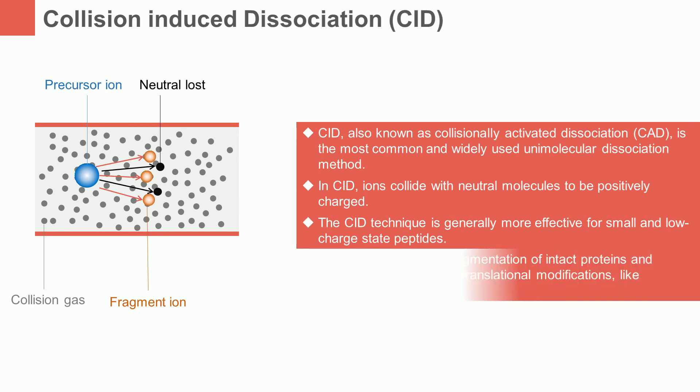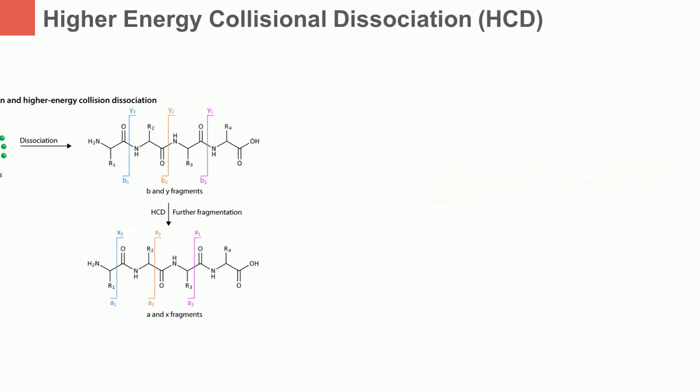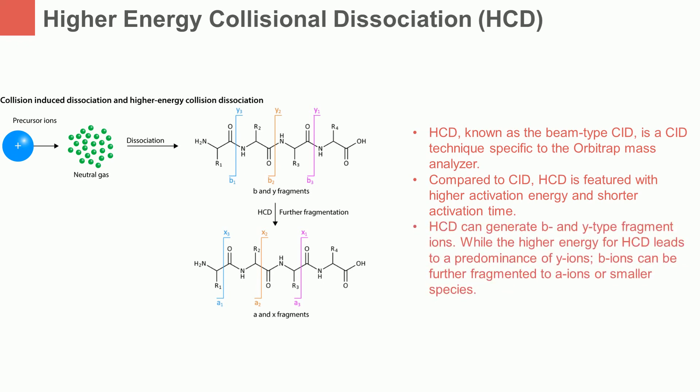Collision-induced dissociation is not suitable for fragmentation of intact proteins and peptides with labile post-translational modifications like phosphorylation. Higher-energy collisional dissociation, known as beam-type CID, is a collision-induced dissociation technique specific to the Orbitrap mass analyzer. Compared to CID, HCD features higher activation energy and shorter activation time. HCD can generate B- and Y-type fragment ions, while the higher energy for HCD leads to a predominance of Y-ions. B-ions can be further fragmented to A-ions or smaller species.